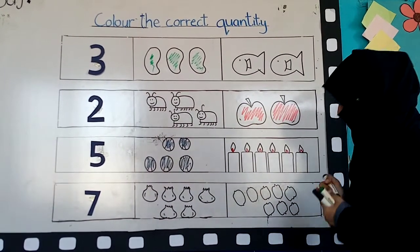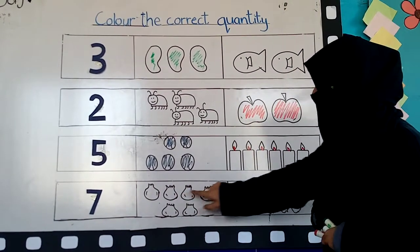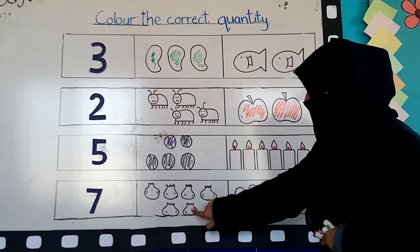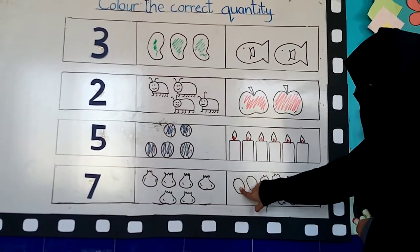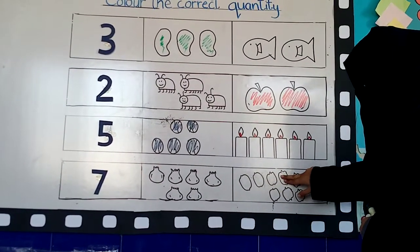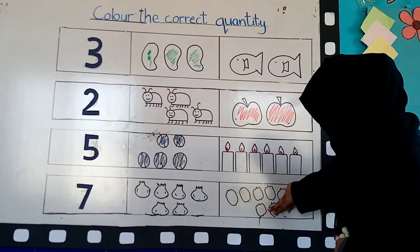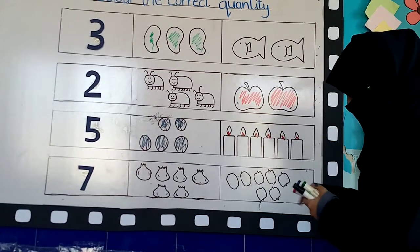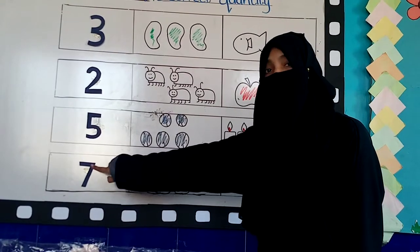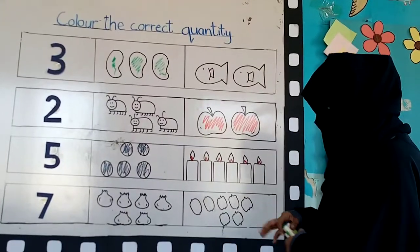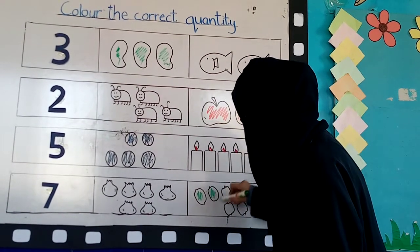Look down — how many candies are here? Count: one, two, three, four, five, six. Six. And now how many lemons are here? One, two, three, four, five, six, seven. Seven lemons. So we have to color seven because the number is seven. We have to color the lemons. I don't have yellow color so I'll do green, but you have to do yellow color on the lemons.